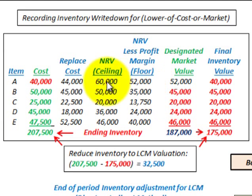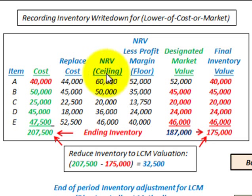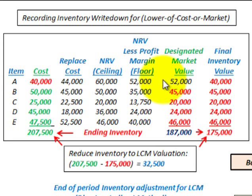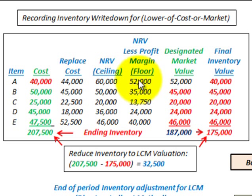We come up with a designated market value for this ending inventory by setting a replacement cost on each of these items. This is for our market value, and we have our ceiling amount and then we have our floor amount. What we're going to do for our designated market value is simply find the middle amount between these three values: our replacement cost, our ceiling, and our floor.